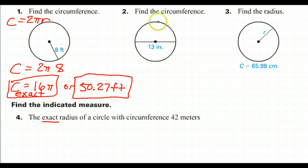Okay, number two: find the circumference. The circumference is 2 times pi times the radius.